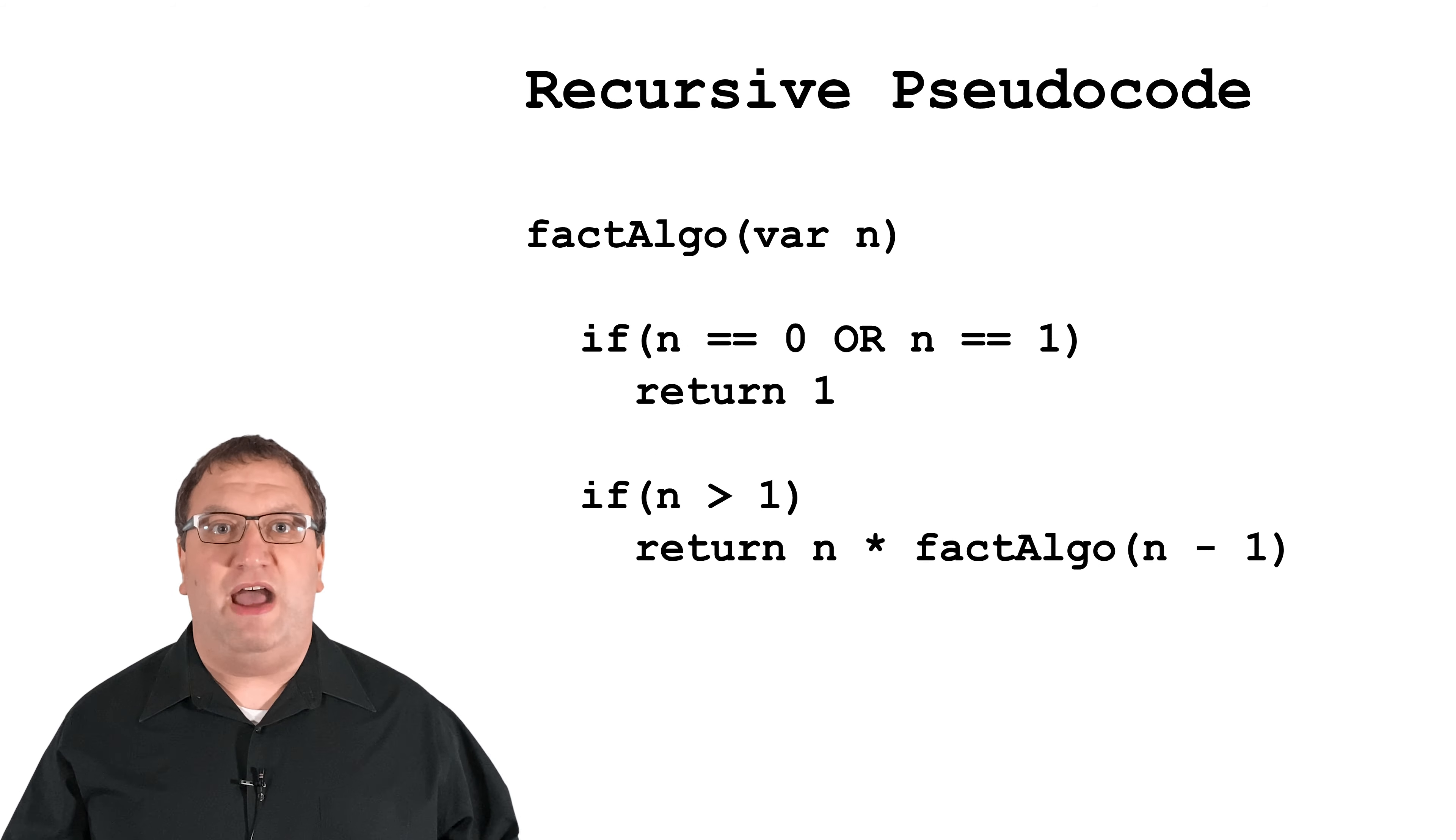In this algorithm, 1 factorial is our base case because it provides a solution without calling our factorial algorithm again.